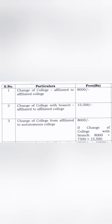The second option is change of college with branch change, where you are changing both your college and your branch, moving from an affiliated college to another affiliated college — both under VTU. In that case you have to pay 15,500 rupees. So the first two line items are for moving from affiliated college to affiliated college: one with college change only, and one with college and branch change.